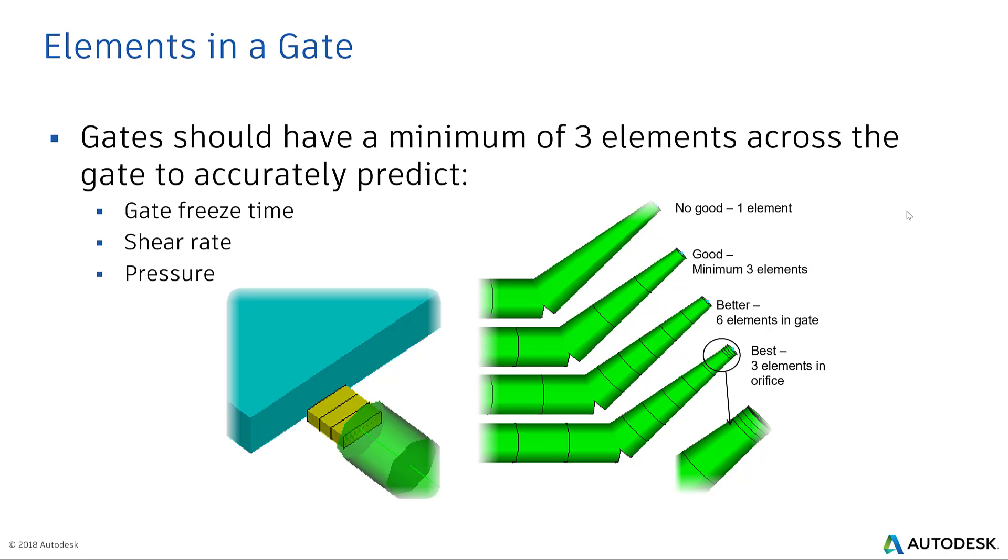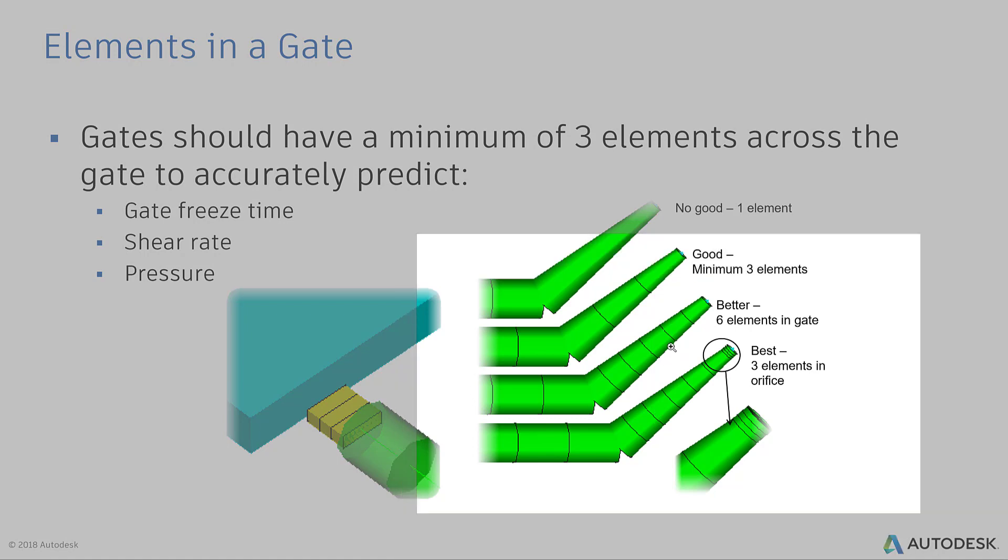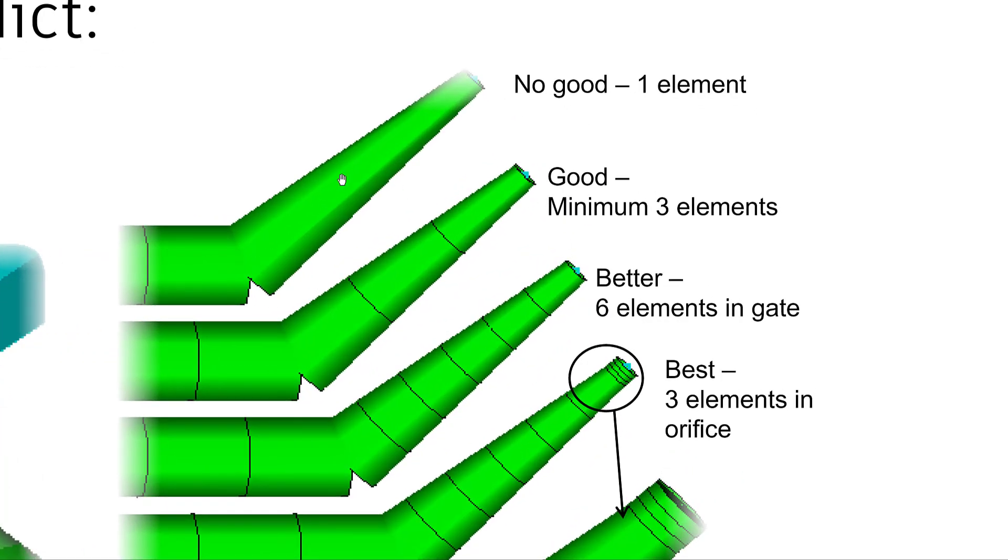When I say what are the best practices, you should have at least minimum three elements across the gate to accurately predict those three results. Now let's look at this closer. Many times in a hurry we just end up with one element, and that's not a good practice at all. I never recommend it.